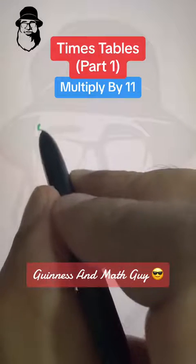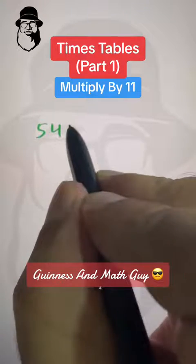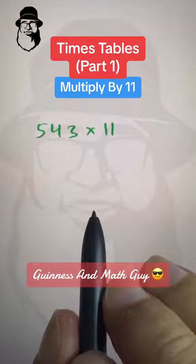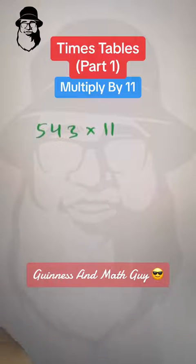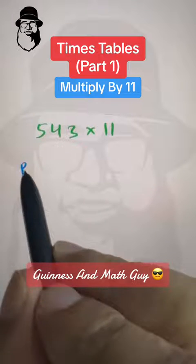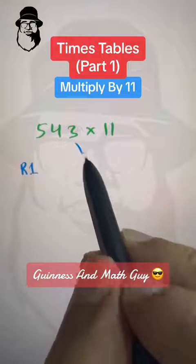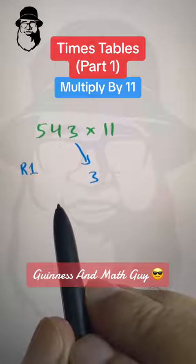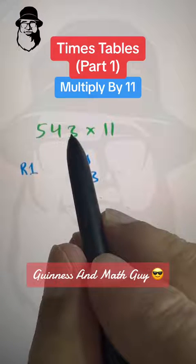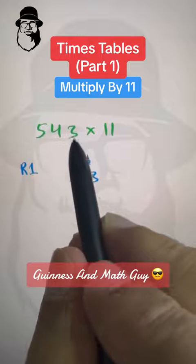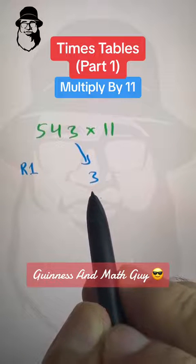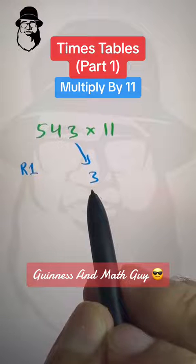Let's say we want to multiply 543 by 11. There are three rules here. Rule number one is bring down this three, and then the rightmost digit of the multiplicand bring down that. So this will be the rightmost digit of the answer.